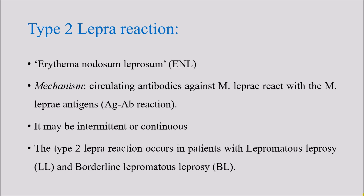Type 2 lepra reaction, also known as erythema nodosum leprosum (ENL), has a mechanism of antigen-antibody reaction. It occurs due to circulating antibodies against Mycobacterium leprae antigen reacting with the mycobacterial antigen. It can be either intermittent or continuous. Unlike type 1 which is common in borderline diseases (BT, BB, BL), type 2 is more common among lepromatous leprosy (LL) and borderline lepromatous leprosy (BL) cases.